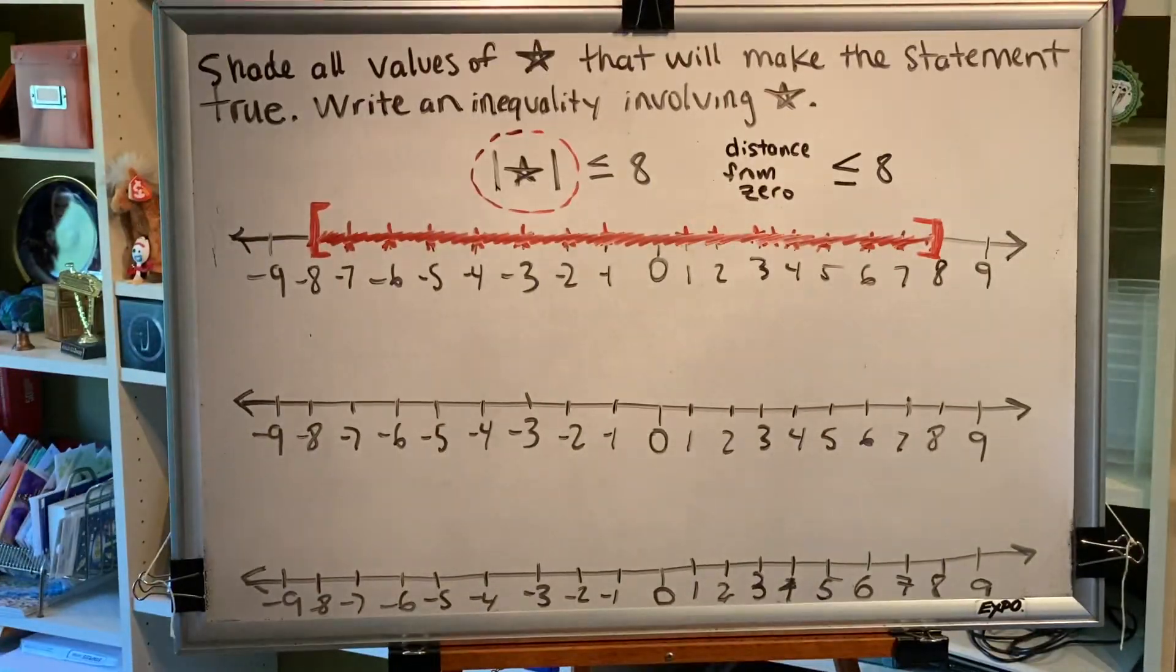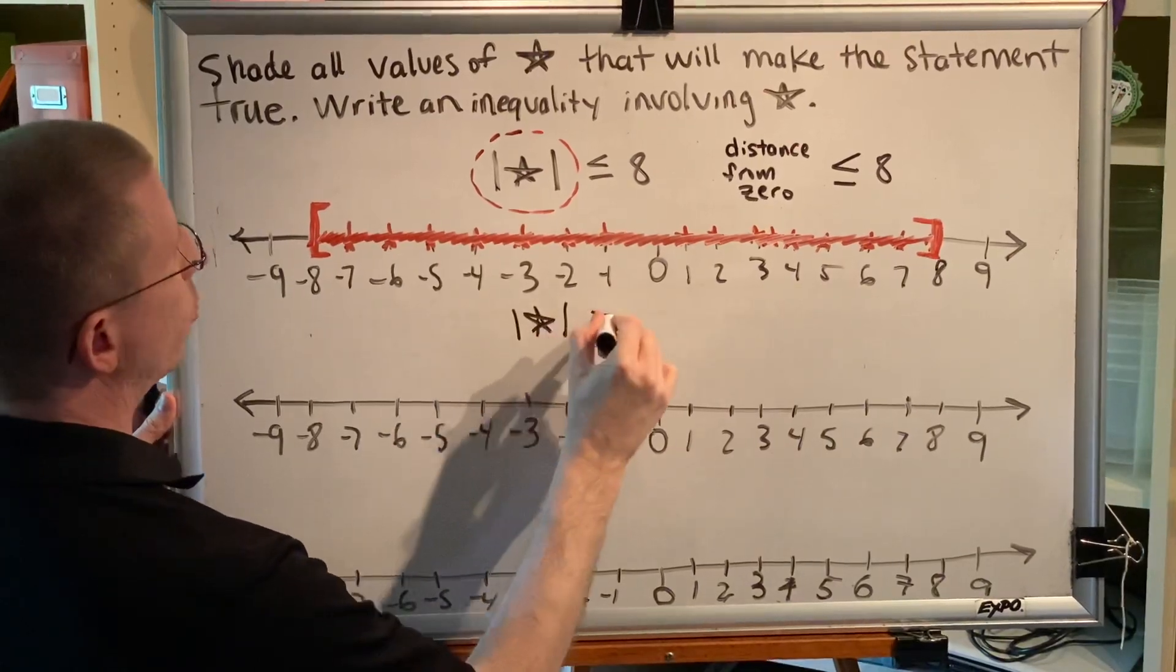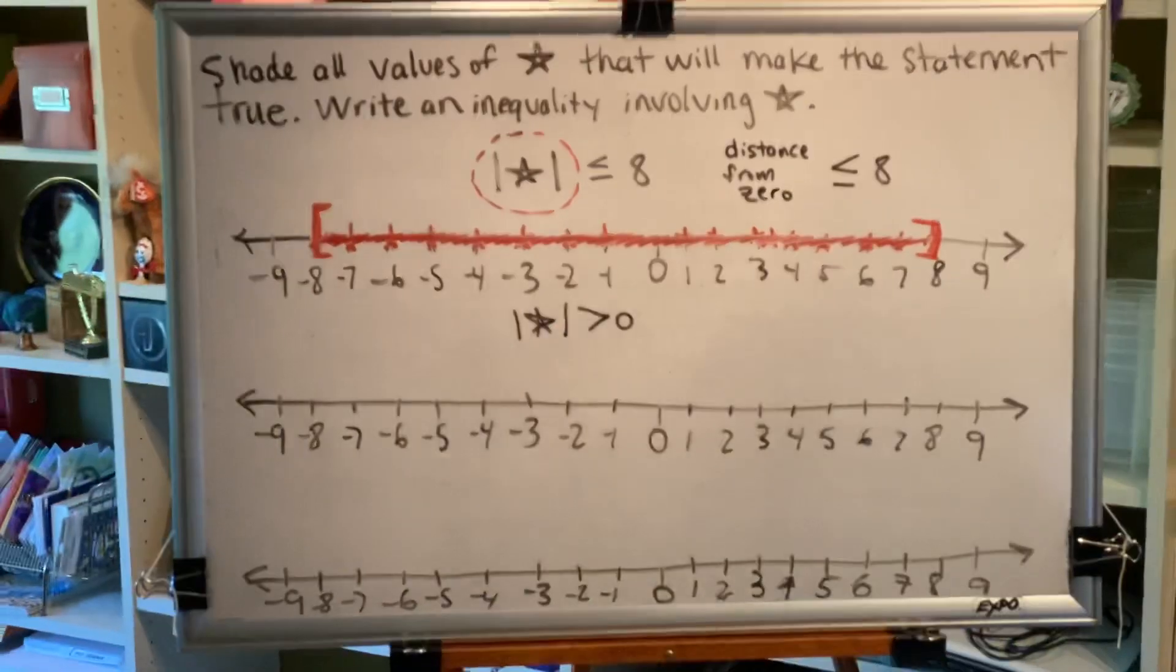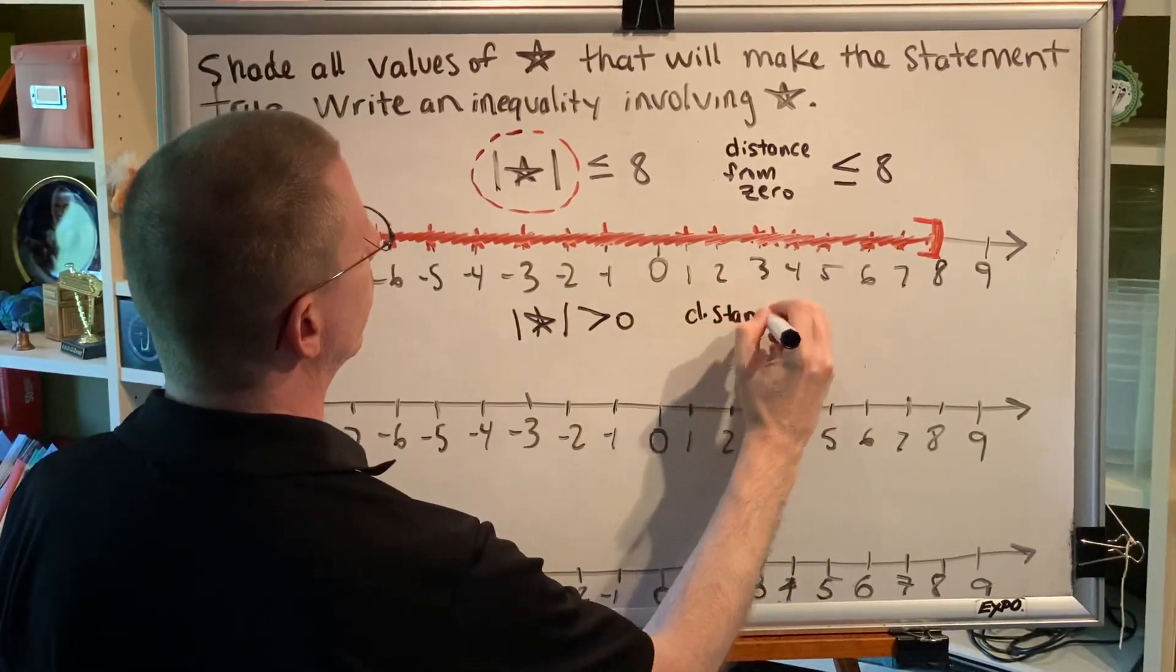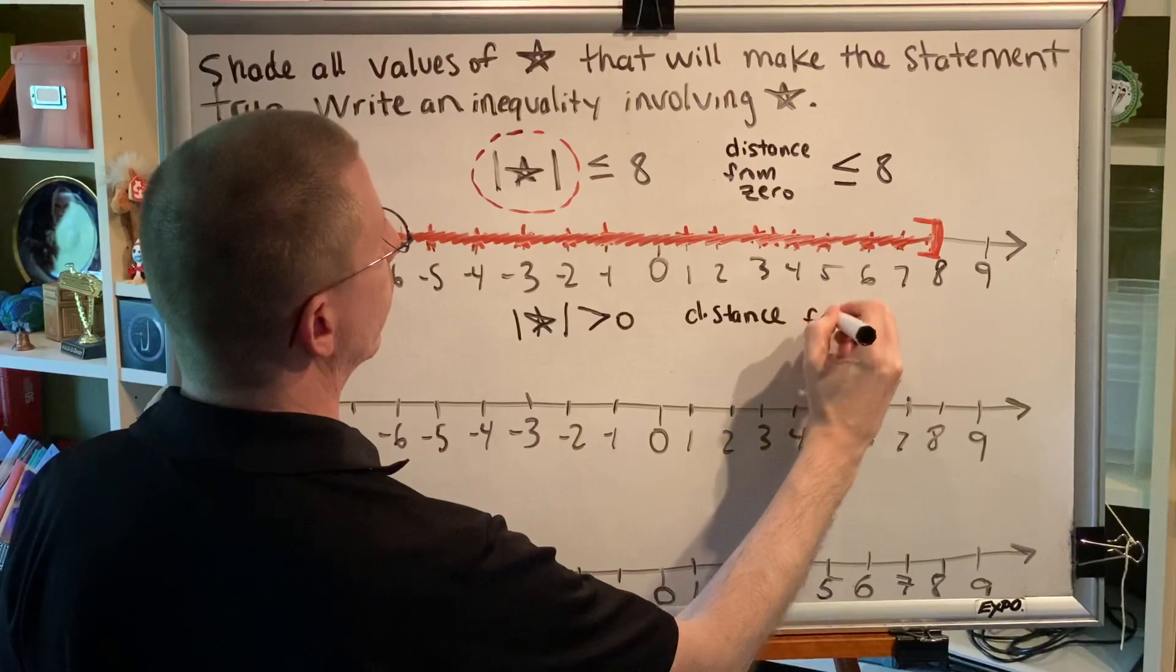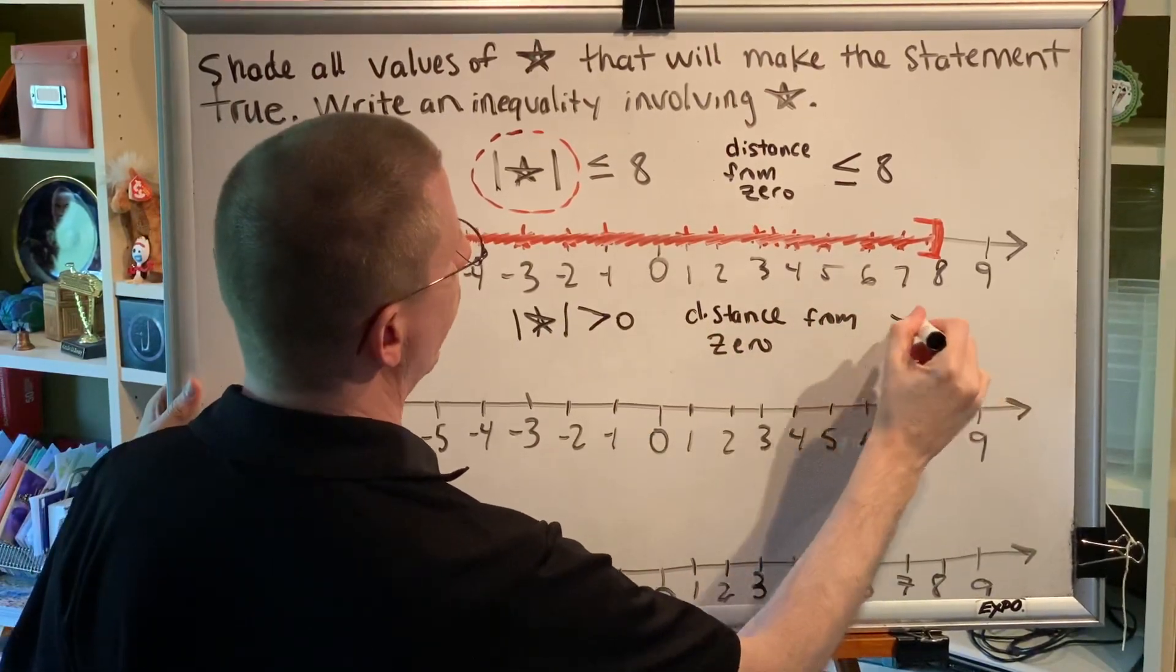Okay, let's look at another problem. How about this one? The absolute value of star is greater than 0. Alright, so what that means is that we want the distance from 0 to be more than 0.